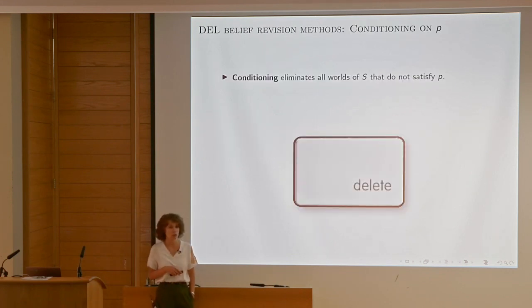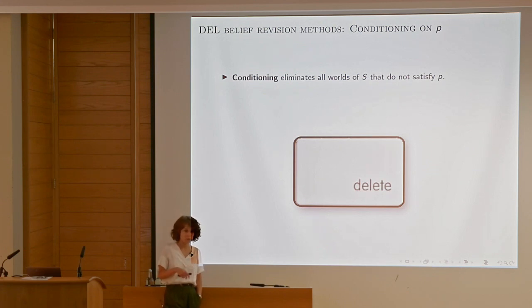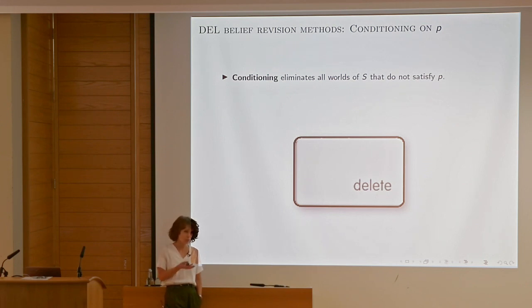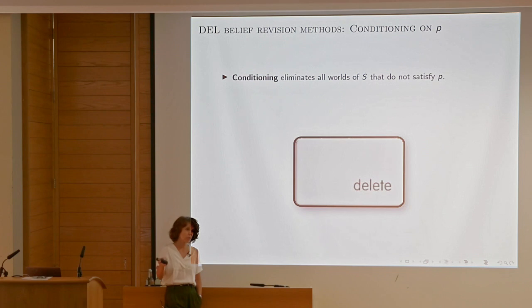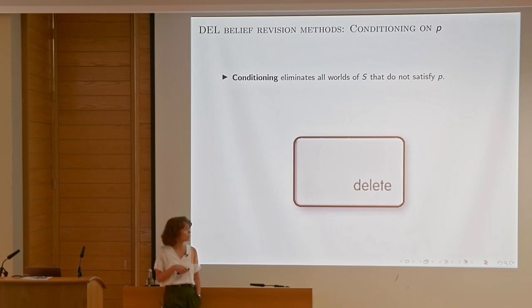The most popular belief revision methods: first, conditioning deletion — Bayesian learning works like this, we zero out the stuff that doesn't conform to our observation. The condition for proper treatment is trusting the source. If you think of multi-agent situations, receiving false information happens all the time — you can't really trust your source deeply. And here is something considered very much in game theory and decision theory: lexicographic upgrade.